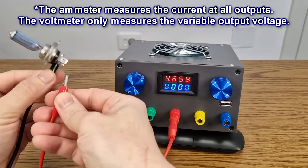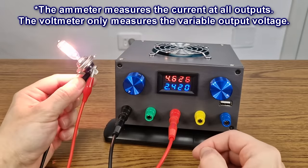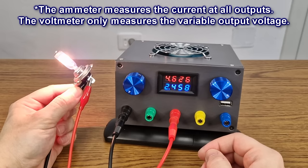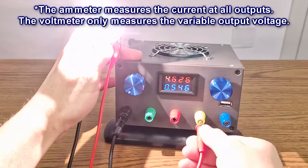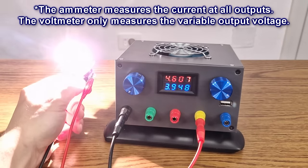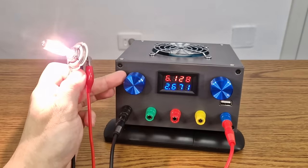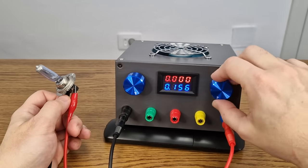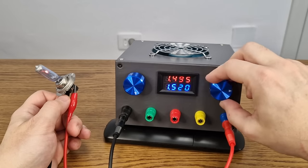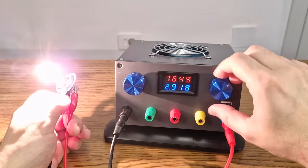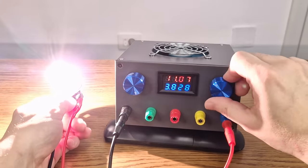I will test it with a 55 watts car light bulb. On the 5 volts output first, 2.4 amps. With 12 volts, it draws almost 4 amps. And the variable output. Let's check the current limiting adjustment. This cheap constant current constant voltage converter seems to be very good.